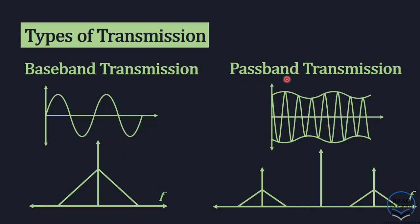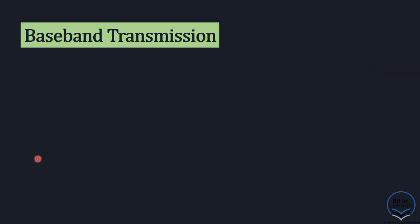But in the case of passband transmission, if we want to transmit the same signal, it may be converted to some other signal which looks different. And in that case, this signal will look different in the frequency domain as well.